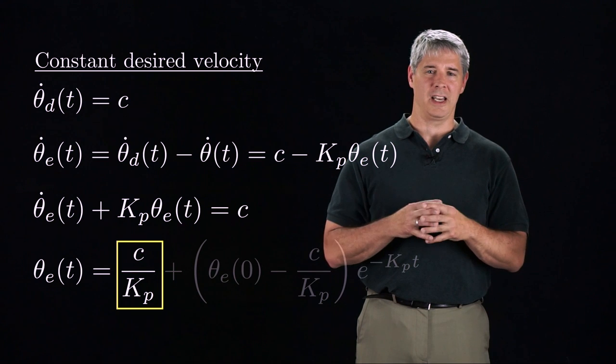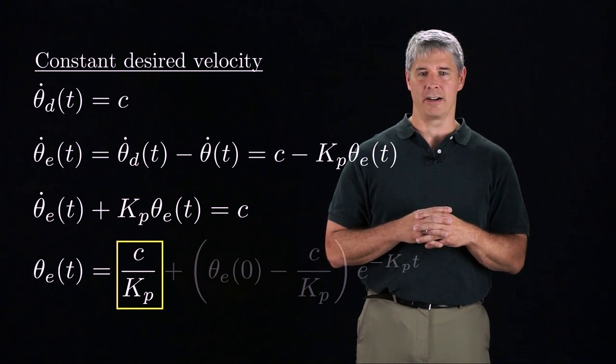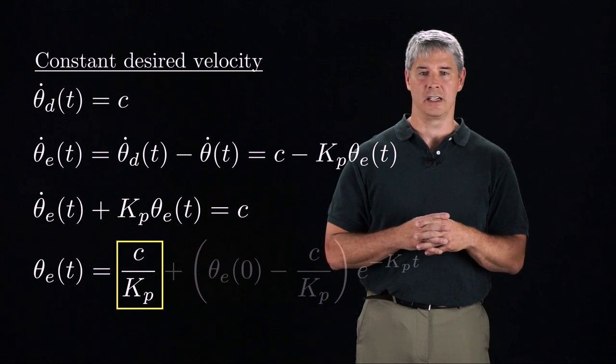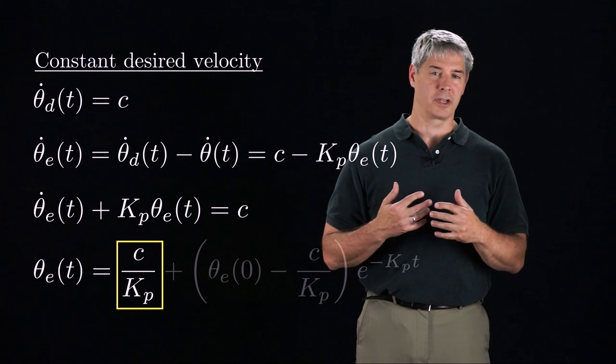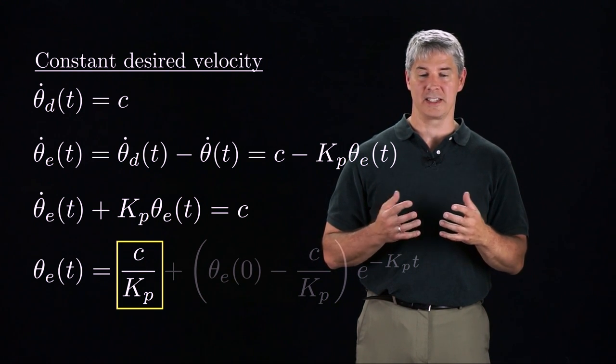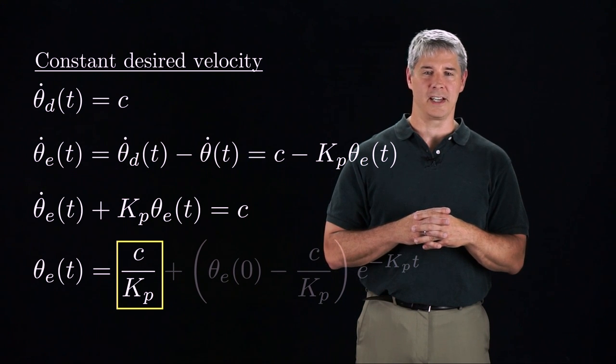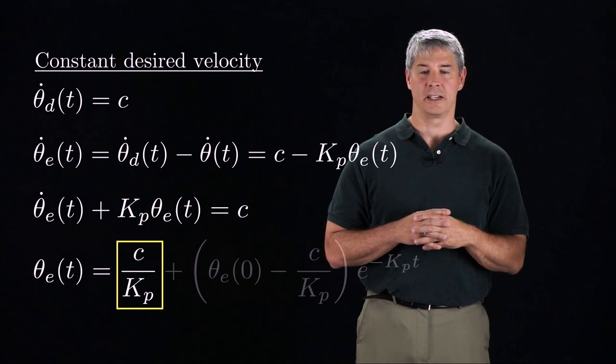The key limitation is that the P-controller needs error to command a non-zero velocity. So while proportional control can eliminate all error when stabilizing a setpoint, it cannot eliminate all error when the desired motion has a non-zero velocity.